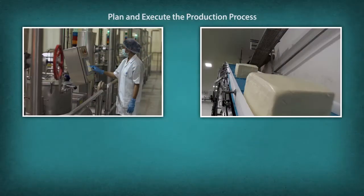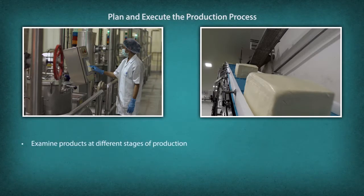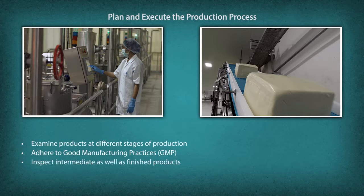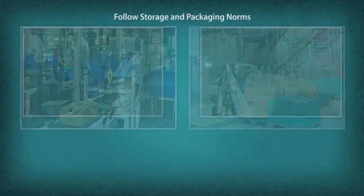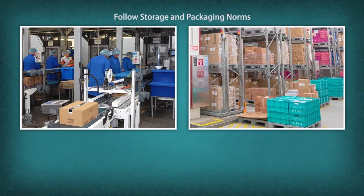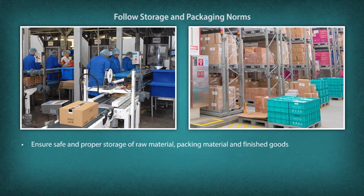Plan and execute the production process: examine products at different stages of production, adhere to good manufacturing practices, and inspect intermediate as well as finished products. Achieve quality and quantity products: ensure the products meet the quality standards set by the organization. Follow storage and packaging norms: ensure safe and proper storage of raw material, packaging material and finished goods.